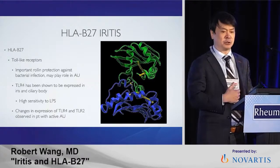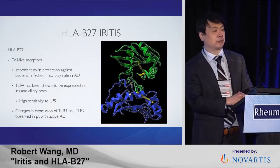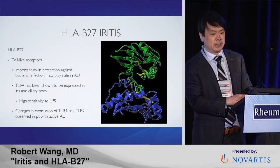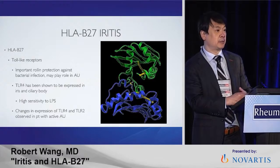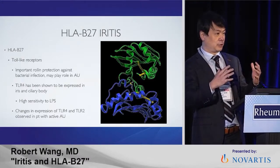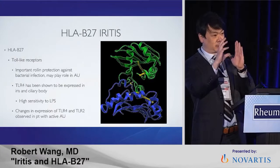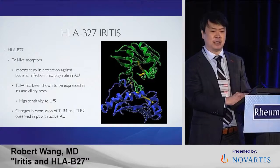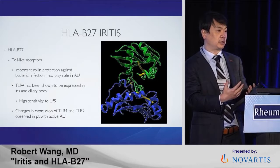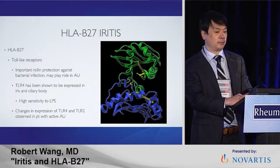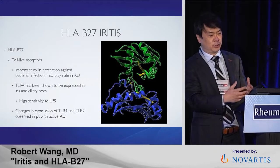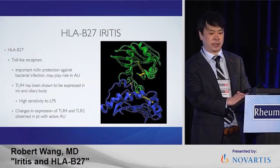Toll-like receptors can also play a role. Toll-like receptors play a role in bacterial infections and may play a role in autoimmune uveitis. Toll-like receptor 4 has been shown expressed in the iris and ciliary bodies — the front of the eye. The iris is the color part of the eye, and the ciliary body is right behind it making the fluid production, giving us our eye pressure. Lipopolysaccharide — one of the molecules we use to induce experimental autoimmune uveitis — has a high sensitivity to TLR4, and TLR2 are observed in higher activity in patients with anterior uveitis.